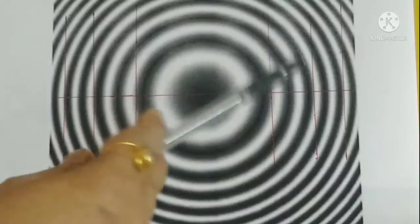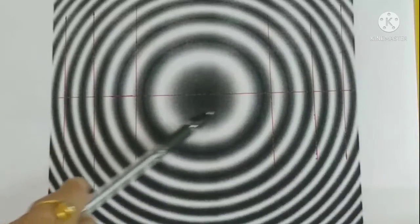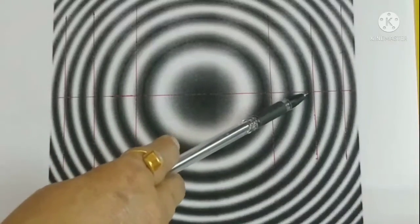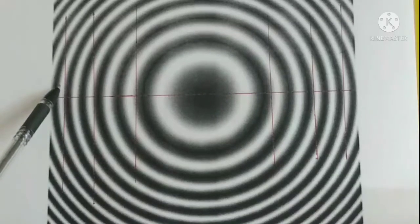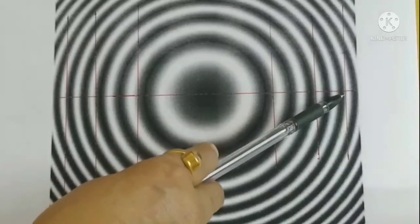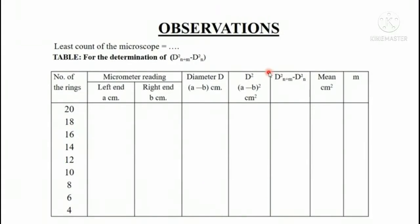When this reading will be subtracted from this reading that will give us the diameter of that particular ring. Similarly reading subtracted from this to the other end that will be the diameter of that ring. In this way we go on subtracting the values and get the diameter of that particular ring.